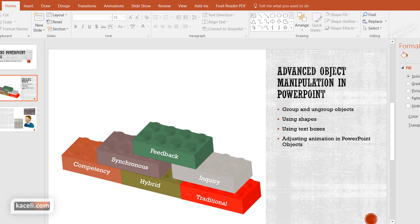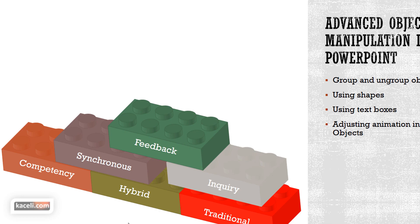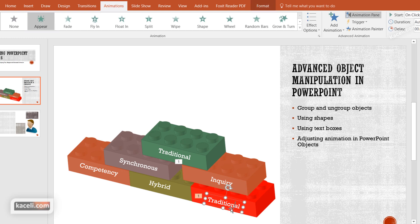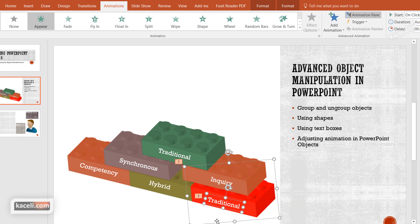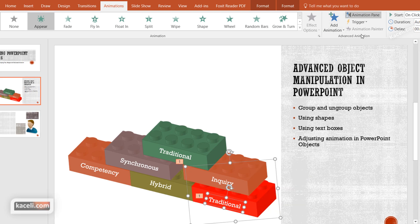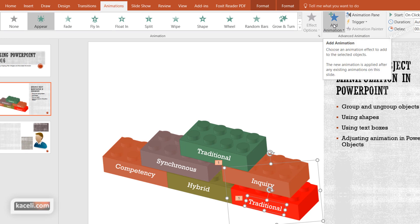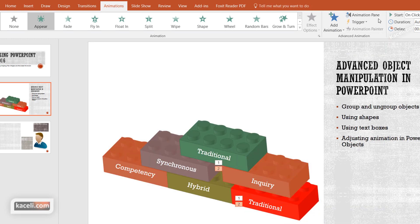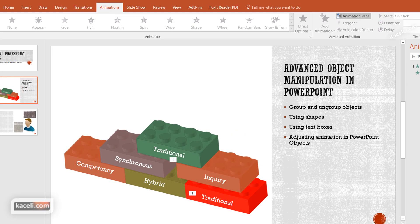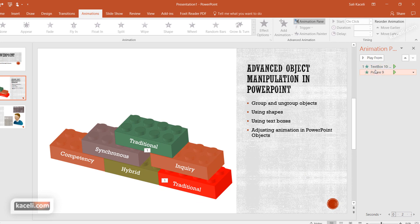If you play the presentation now without animation, everything appears all at once. So you need to select the text component and the Lego piece together, right-click, and group them. Once grouped, add animation by clicking the Animations tab and choosing an animation type. It's also advisable to enable the Animation Pane so you can see and manage the animations for all objects.